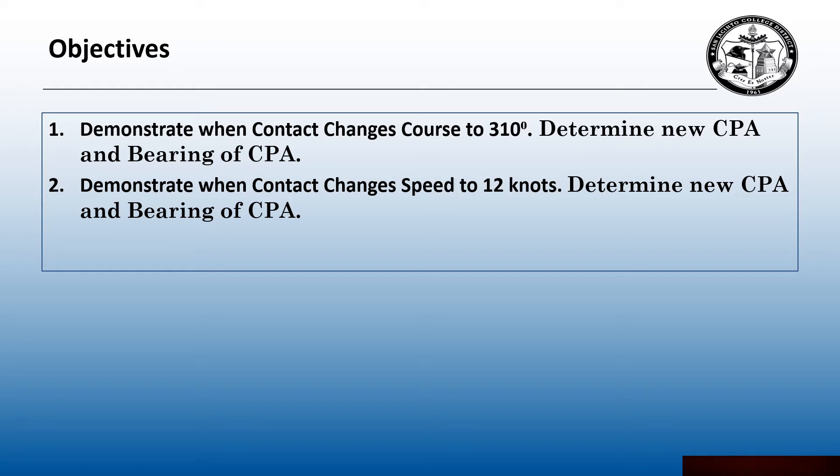My objectives are at the end of this presentation you will be able to demonstrate when the contact changes course to 310 degrees, then determine a new CPA and bearing of CPA. Second, you'll be able to demonstrate when the contact changes speed to 12 knots, then determine a new CPA and bearing of CPA.